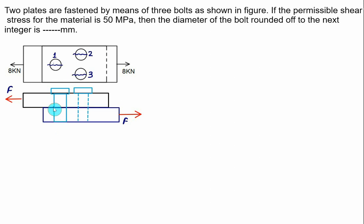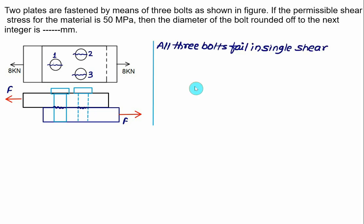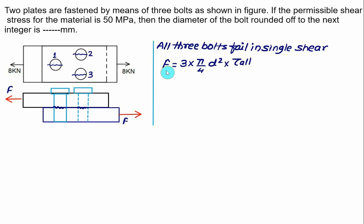One shear area is observed at each cross section. Since all three bolts fail by single shear, we have F = number of bolts × (pi/4 × D²) × tau allowable. With force = 8000 N, number of bolts = 3, and tau allowable = 50 MPa, we solve for diameter D.